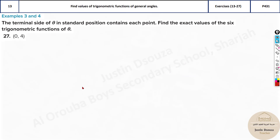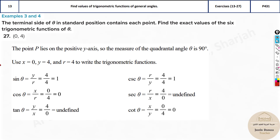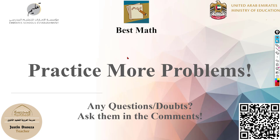These are essentially the same type of problem. Please do the remaining ones by yourselves and check the answers. That is the end of topic number 13. Practice more problems and make sure you remember the formulas for sine, cos, tan, secant, cosecant, and cotangent. These are very important. X and y will be given — only r needs to be found — then substitute accordingly.